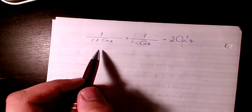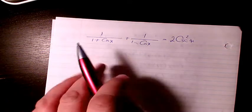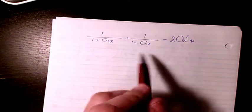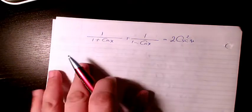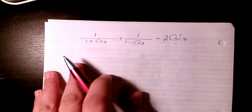In this example I have 1 over 1 plus cosine x plus 1 over 1 minus cosine x, we call it 2 cosecant squared x.